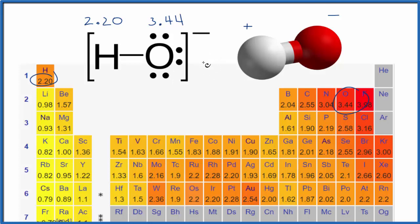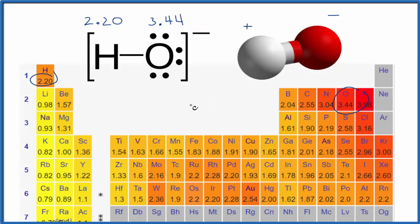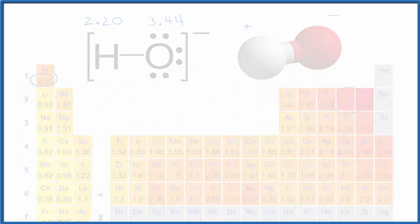We should also note that with the hydroxide ion here, we have this extra negative — this extra electron — and that also contributes to the fact that it will interact with other polar substances like water, for instance. So in answer to our question, the hydroxide ion is a polar ion. Thanks for watching.